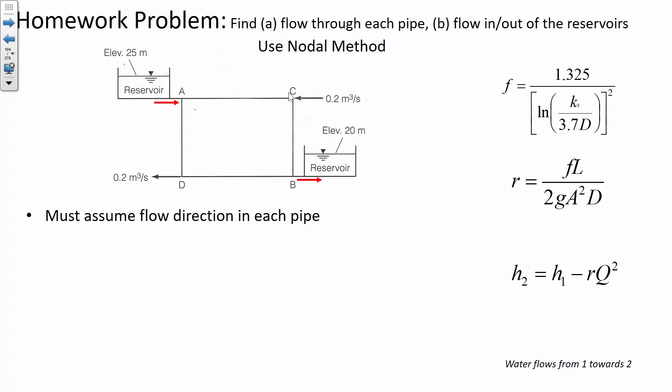There's also 0.2 coming out at junction D. So we assume that Q_BD plus Q_AD are equal to 0.2. That's the continuity equation at that separate node.